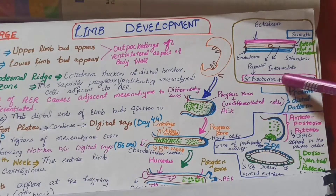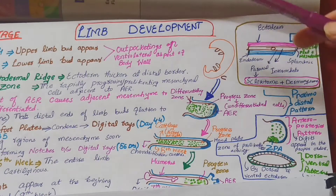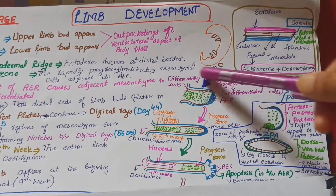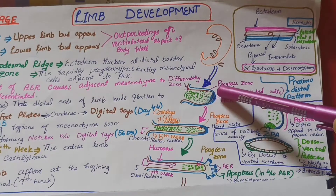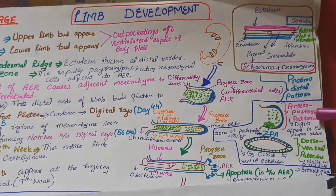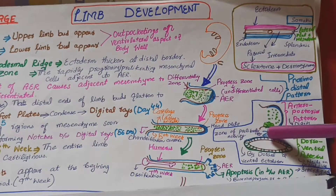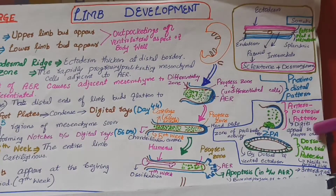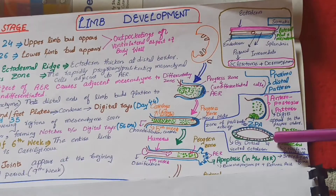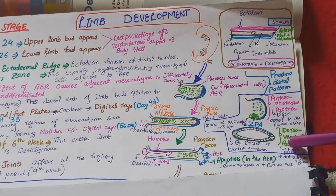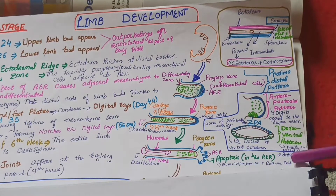Limb development is completed in three main patterns. First is the proximal-distal pattern, in which the AER is located distally and adjacent to it is the progress zone. Second is the anteroposterior pattern, in which mesenchymal cells aggregate at the posterior margin of the limb bud; this region is called the zone of polarizing activity (ZPA), responsible for ensuring digits appear in the proper order. Third is the dorsal-ventral pattern, determined by the dorsal and ventral ectoderm, allowing distinction between the dorsal and ventral aspects of the hand — for example, nails appear on the dorsal aspect.